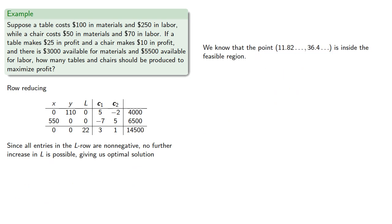We know the point 11.82, 36.4 and so on is inside the feasible region. It's actually one vertex of the feasible region.